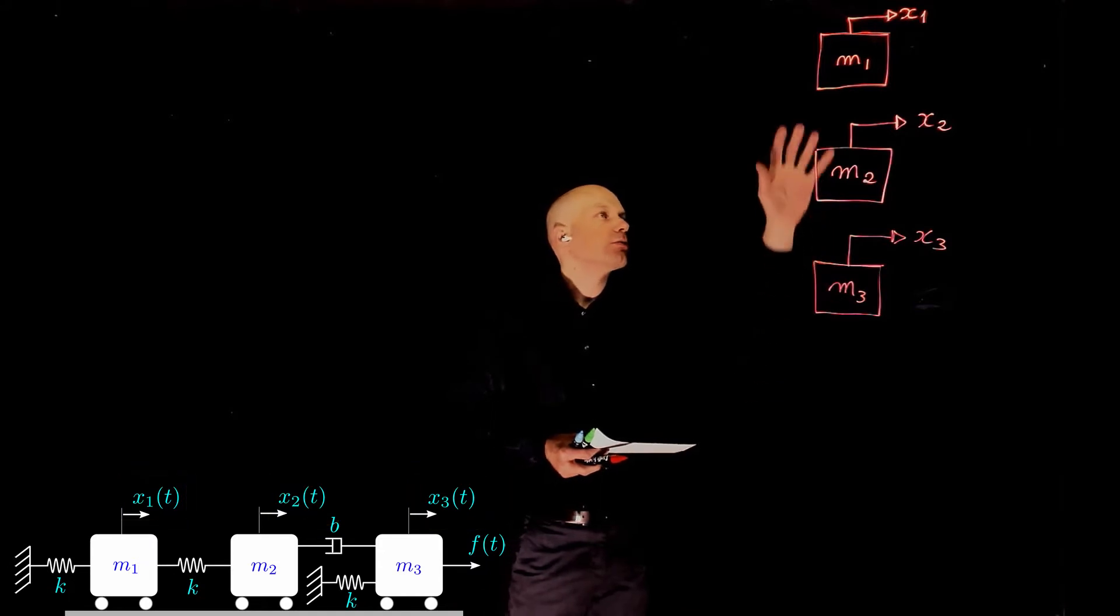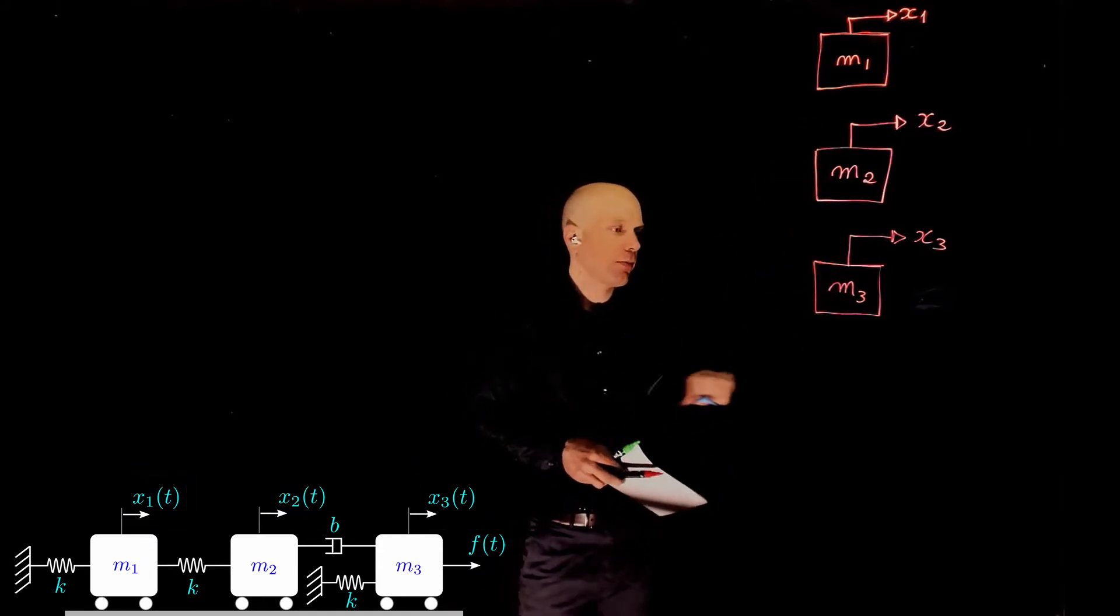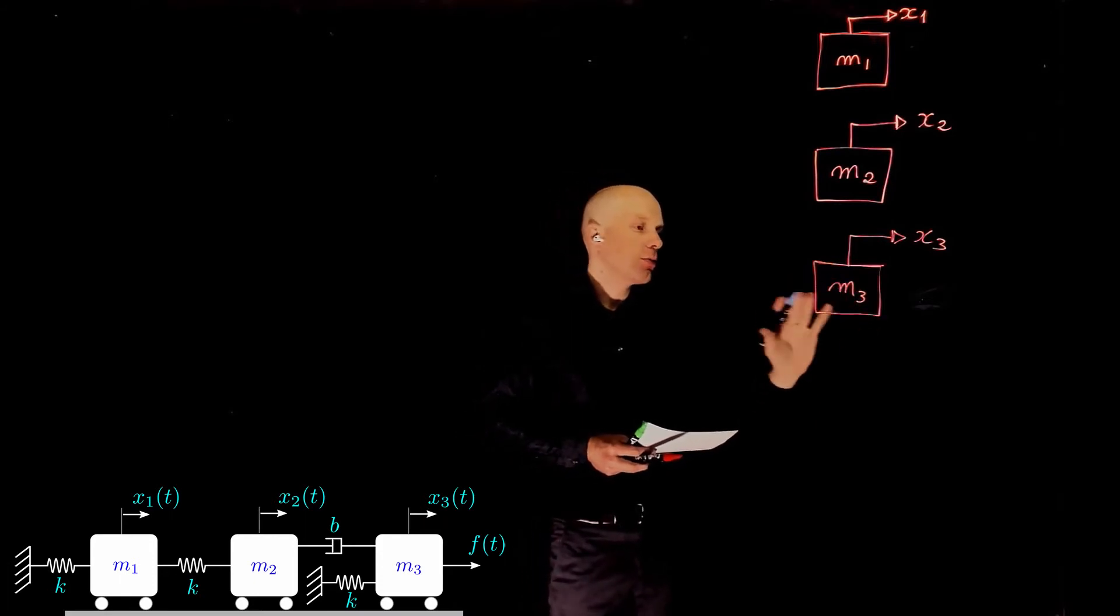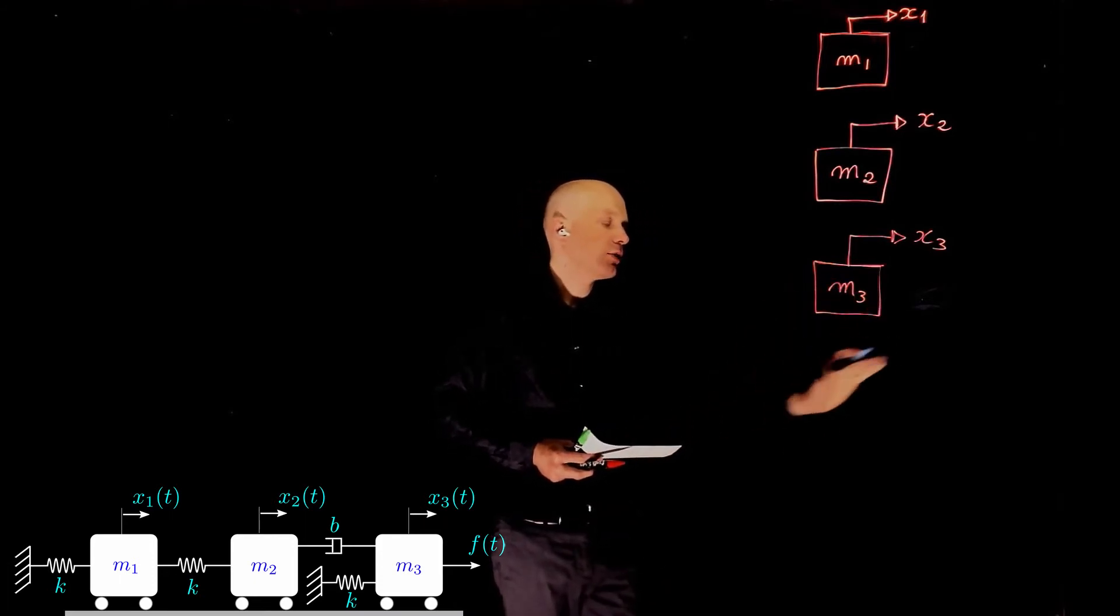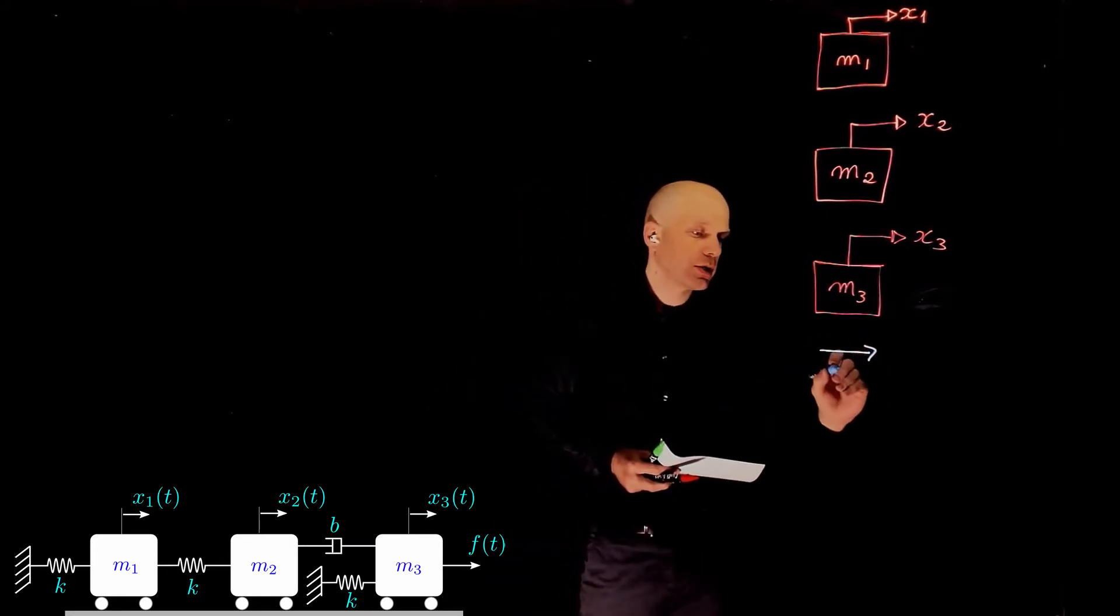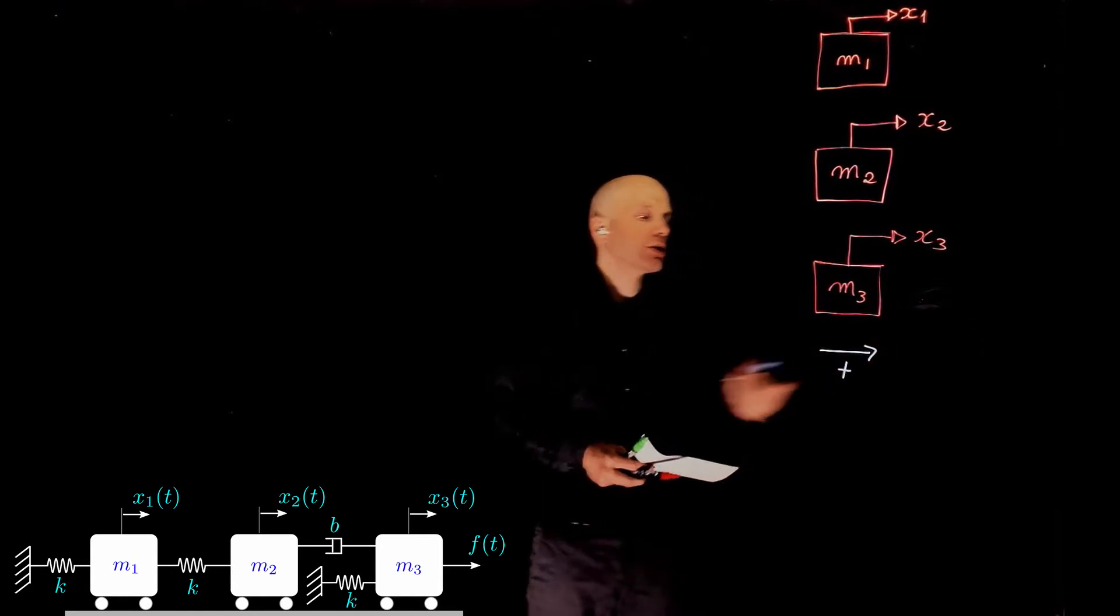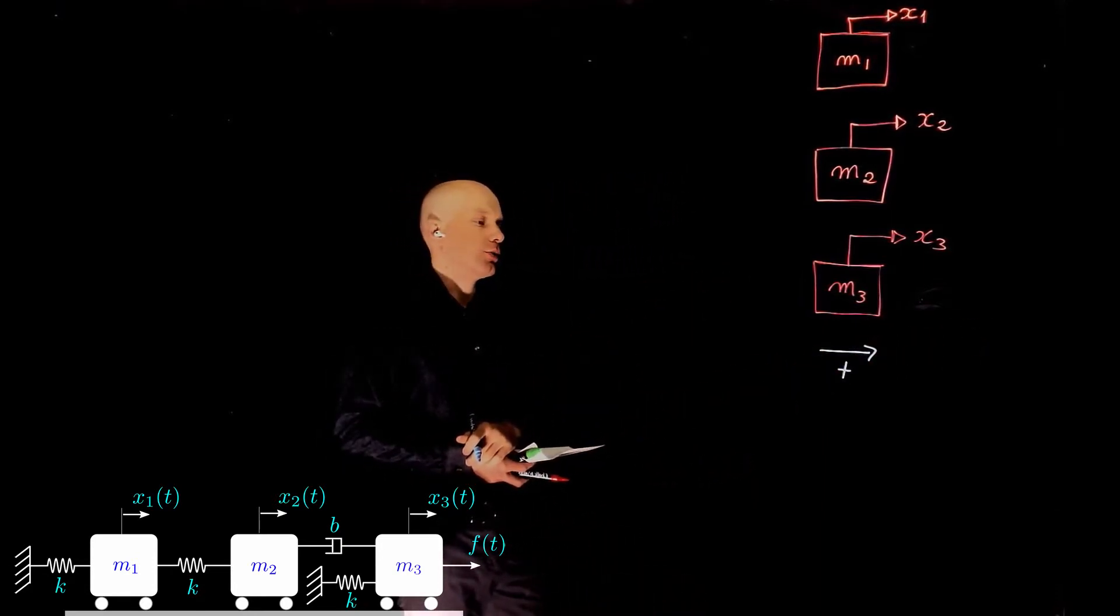Let's start now adding the forces to this diagram. We have to assume a direction for positive and negative forces. Let's assume that everything that moves to the right is positive and all forces that act towards the right are also positive.